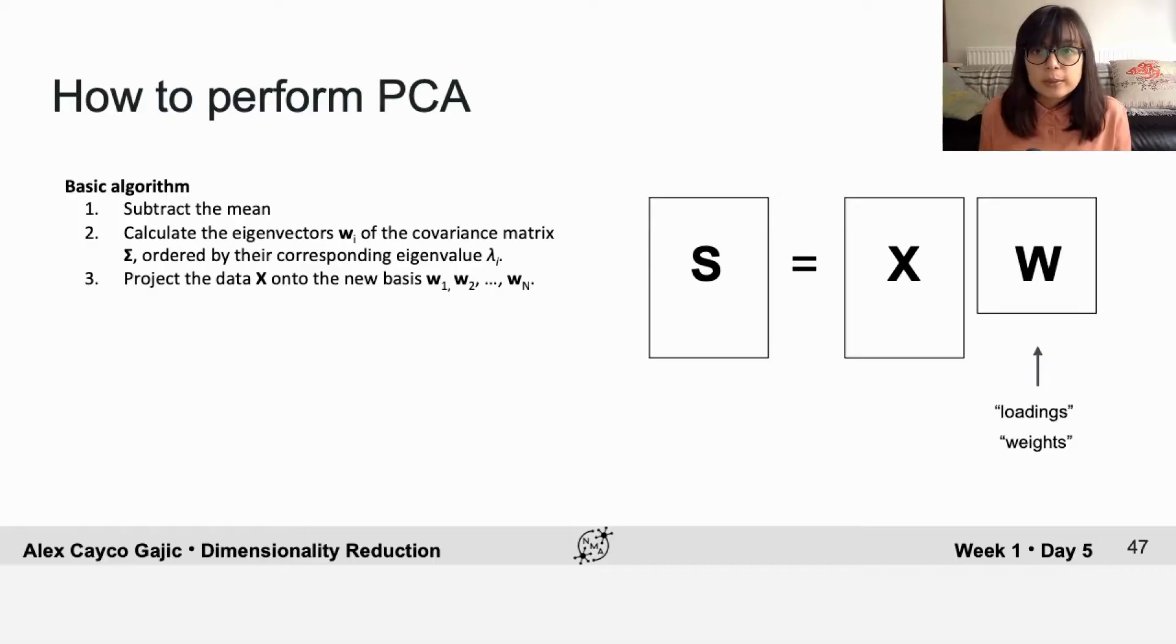There's a bit of different terminology because PCA is so widely used. Generally, the vectors corresponding to the eigenvectors of the new orthonormal basis are usually called loadings or weights, and the projected data is usually described as scores. In the case that we're using PCA for dimensionality reduction, they may also be called latent variables.